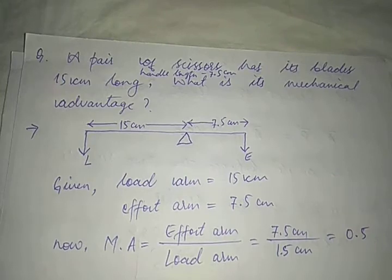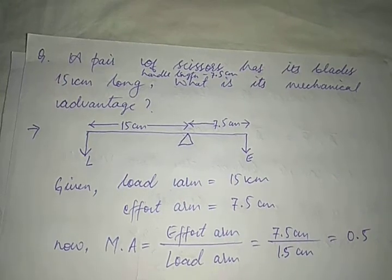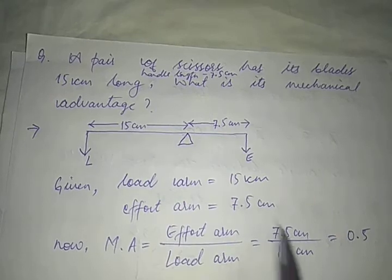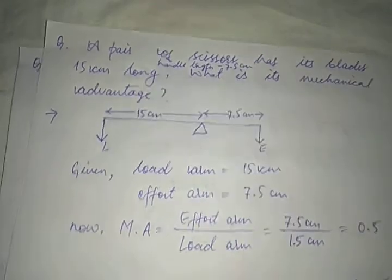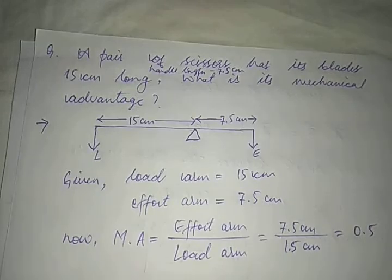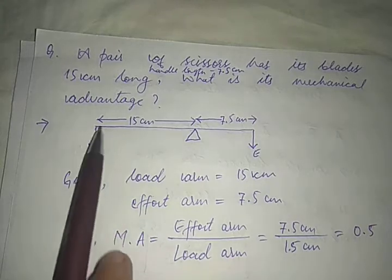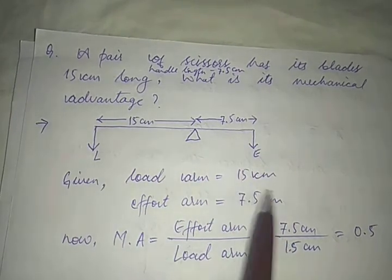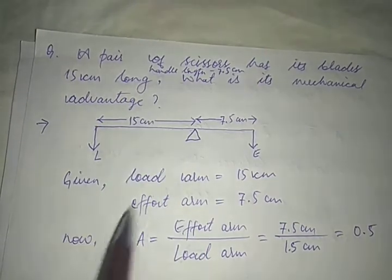Let us start. A pair of scissors has its blades 15 centimeters long and handle length is 7.5 centimeters — what is the mechanical advantage? So wherever possible I tell you to draw pictures, and this is the picture I have drawn, which represents a pair of scissors.